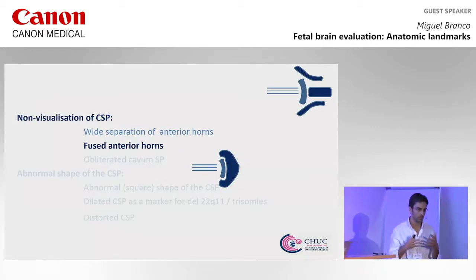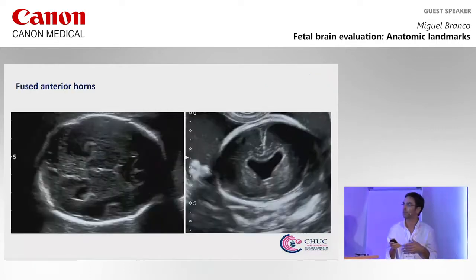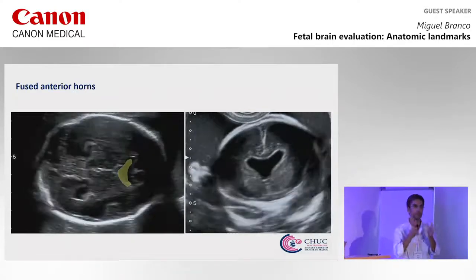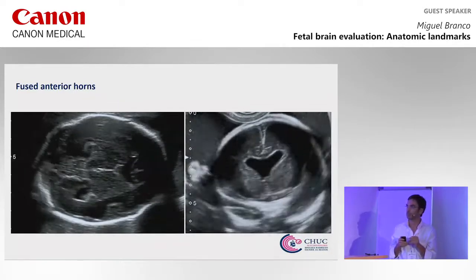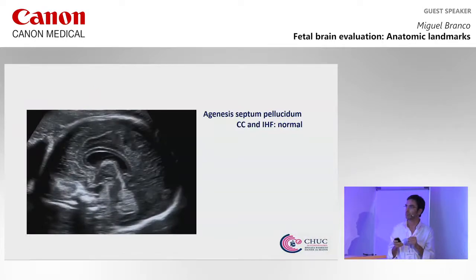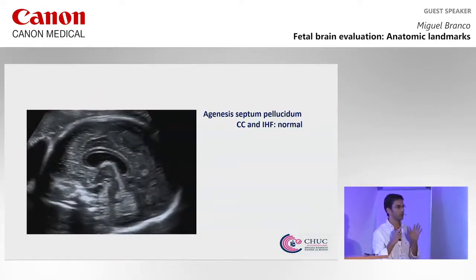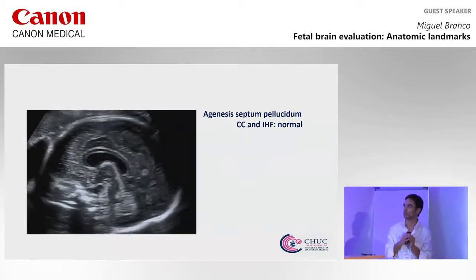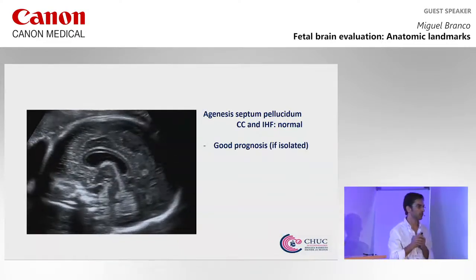Another group: we don't have a CSP and we have anterior fused horns. Like in this case, in coronal evaluation we are not able to see the leaflets of the CSP. If we have an otherwise completely normal evaluation, this could be agenesis of the septum pellucidum, which is most frequently associated with a good prognosis.